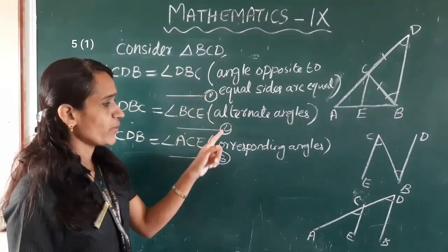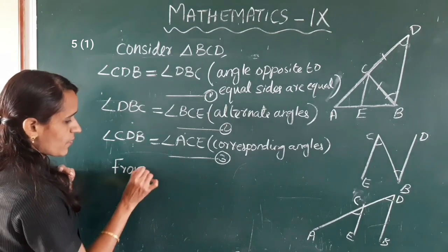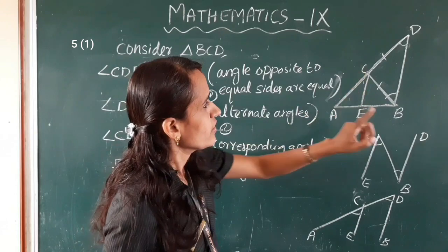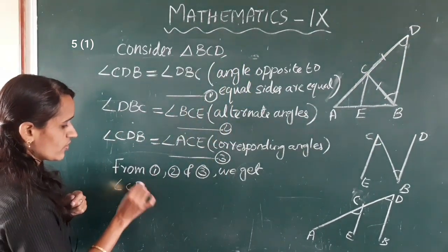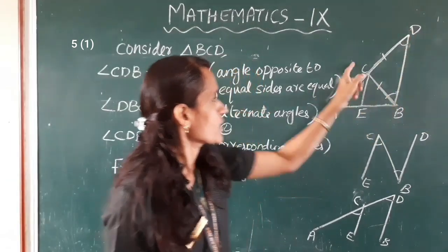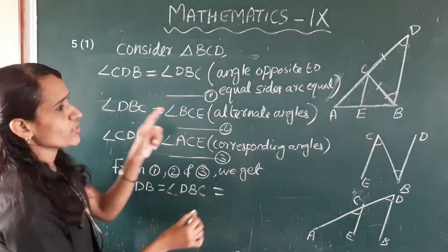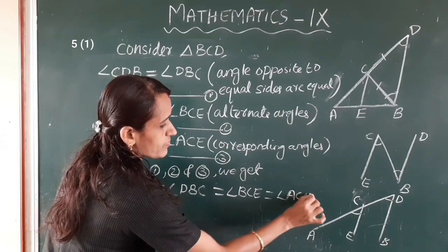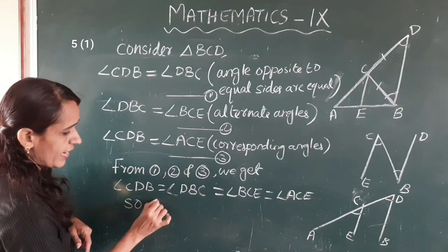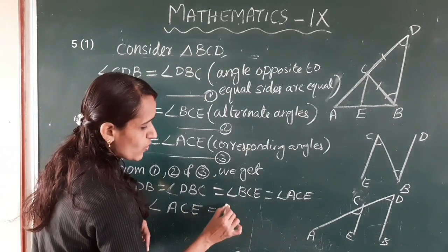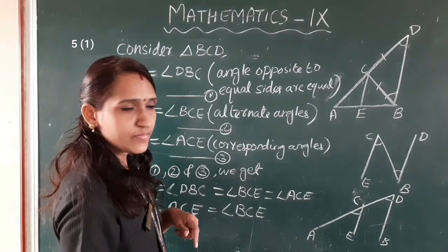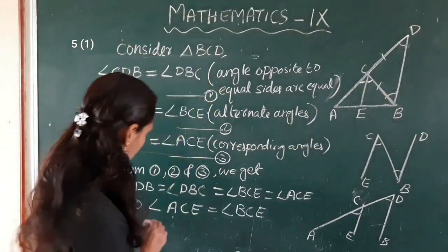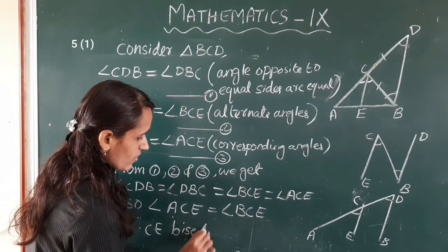From equations 1, 2, and 3, we get angle DBC equal to angle BCE, and this is equal to angle ACE. Therefore angle ACE is equal to angle BCE. So CE bisects angle C.